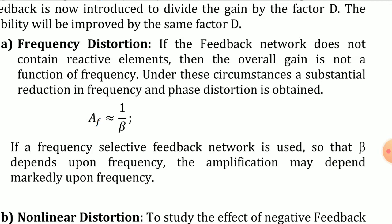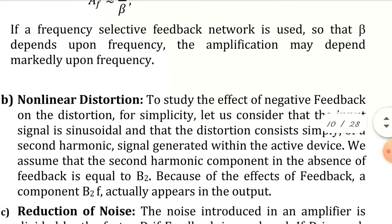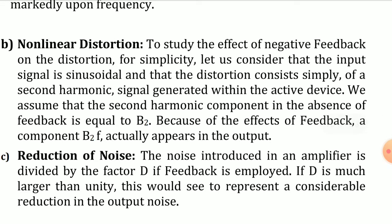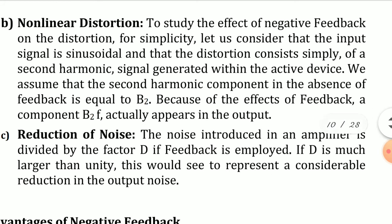This is considered a disadvantage and is only possible when we are using a feedback network. Next is non-linear distortion. Consider that the input signal is a sine wave; the distortion consists of second harmonics. We assume that the second harmonic component in the absence of feedback is equal to beta2. Because of the feedback, a component beta2 times f appears in the output. By returning this back to the amplifier and re-amplifying, the non-linear distortion can be reduced.